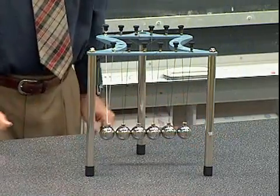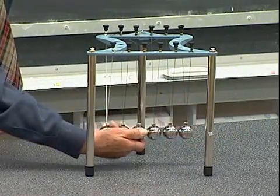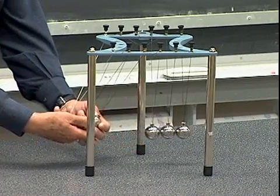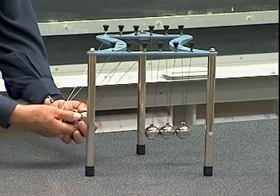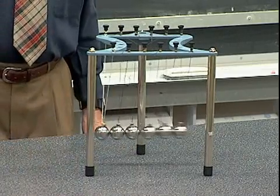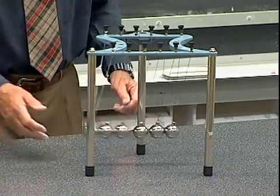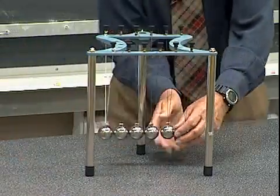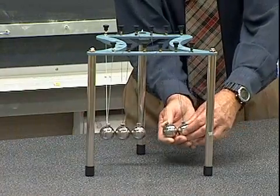Now another way to illustrate that is to have a mass of 3m. So three balls come up, make a collision, and three balls go out, indicating that a mass of 3m and a velocity v will result in a mass of 3m and a velocity v after the collision.